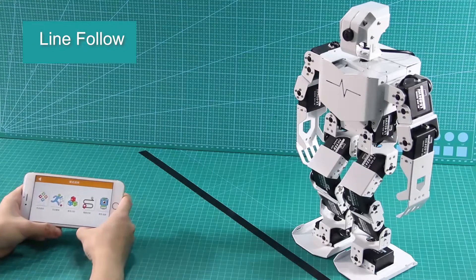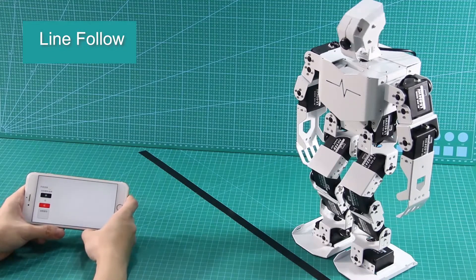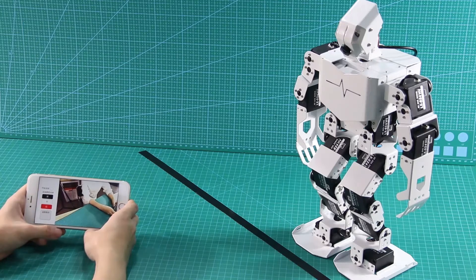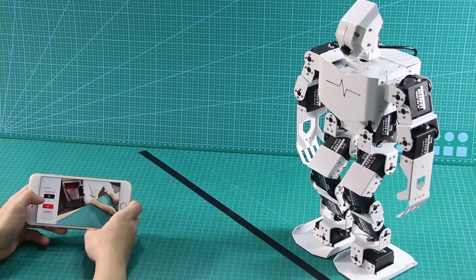OK, next game is Intelligent Line Following. There are three colors you can choose. Select the color and then TonyPi will move along the specific color line.